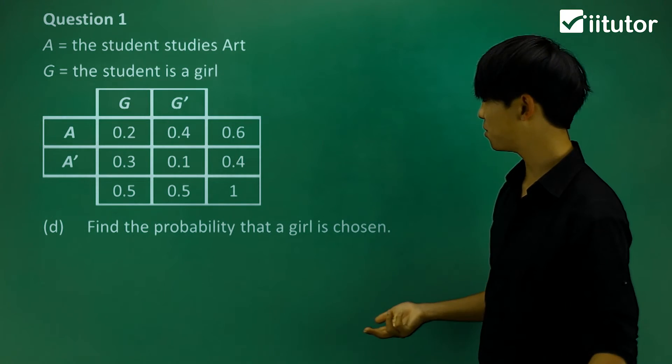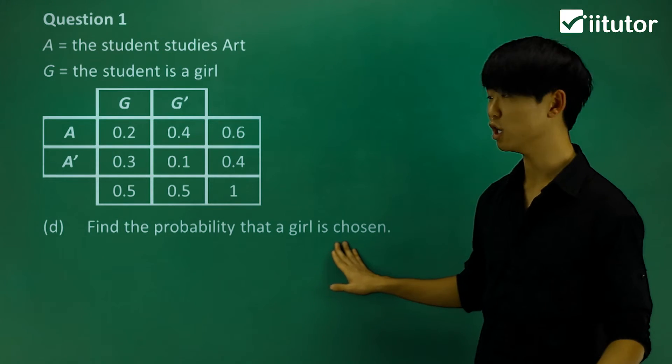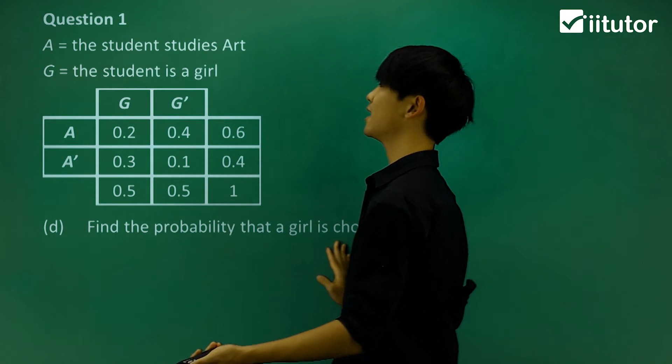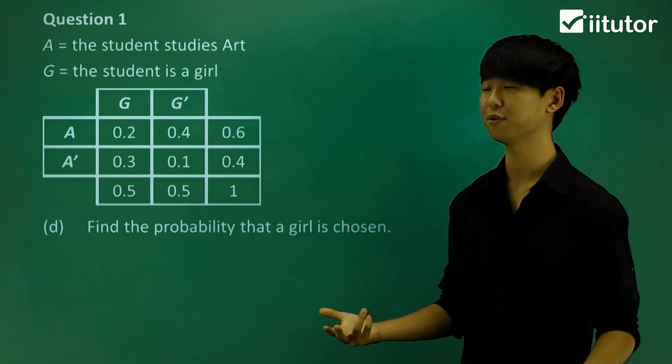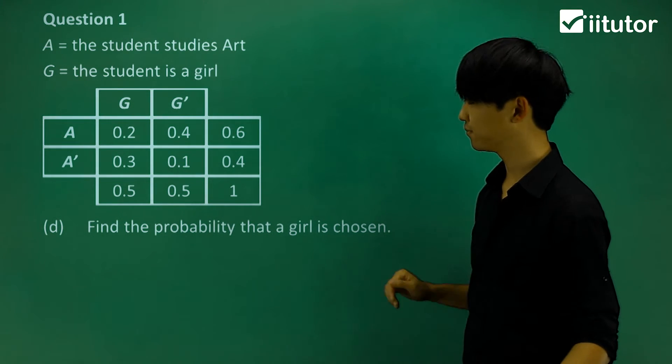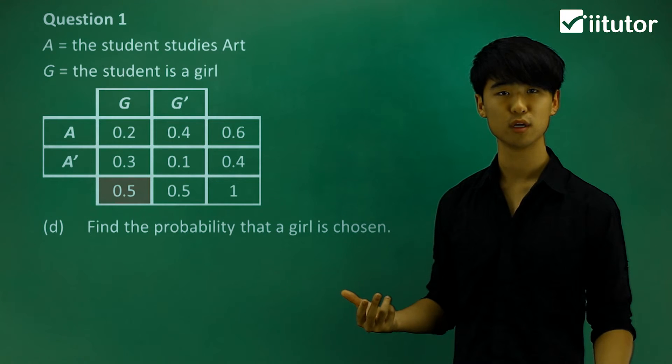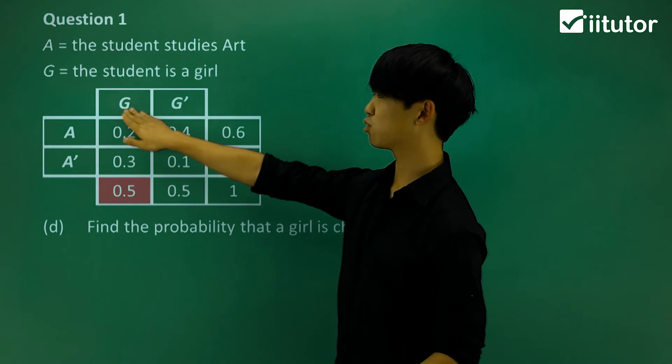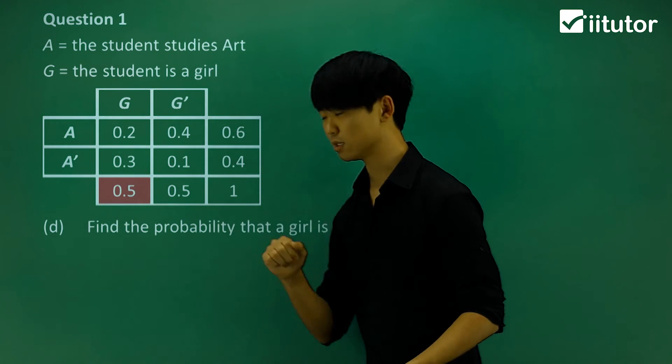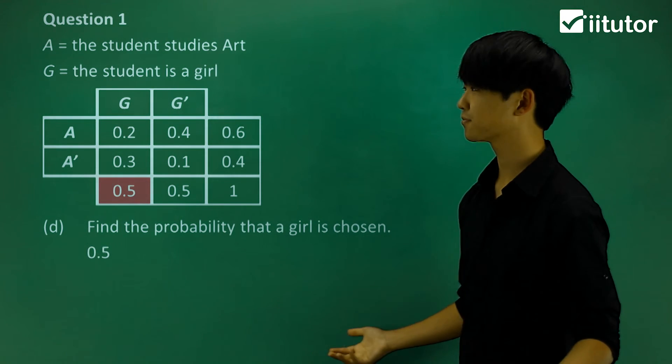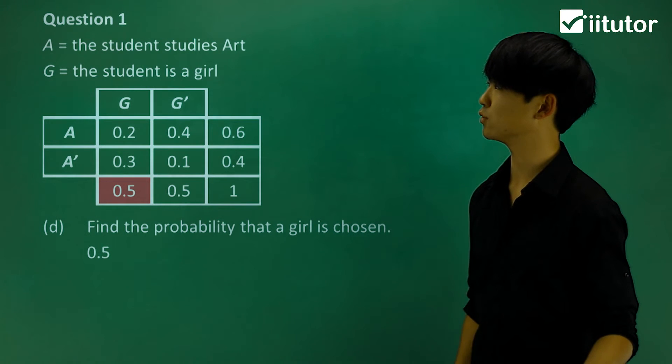Now part D says, find the probability that a girl is chosen. You can see that it has nothing to do with whether they study art or not. The question is just saying, what's the probability that a girl is chosen? Well where is a girl chosen? This is the probability that a girl is chosen. We're just going to go straight to just the probability of a girl, which is 0.5.